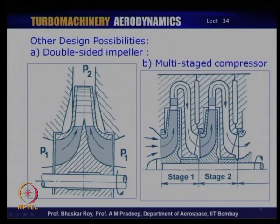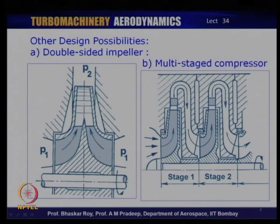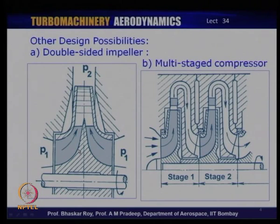This is often called a double-sided impeller — essentially done to almost double the mass flow that is possible — and this has to be decided right at the beginning at the design stage. The other kind of impeller configuration to increase the compression ratio is multistaging.